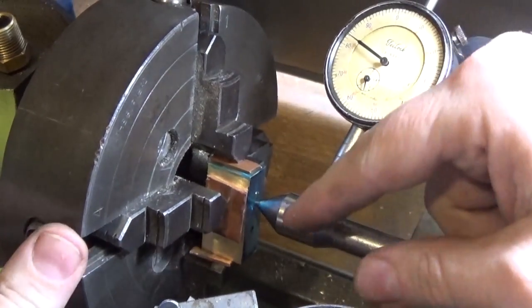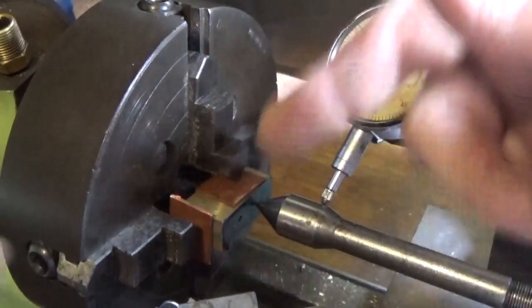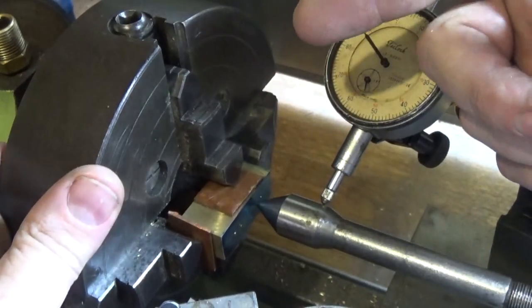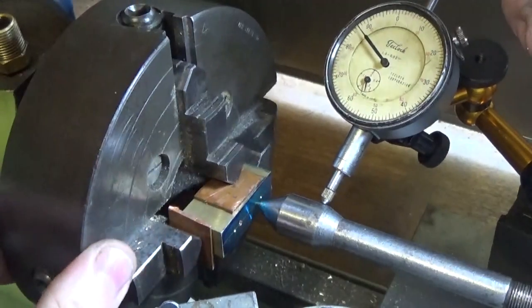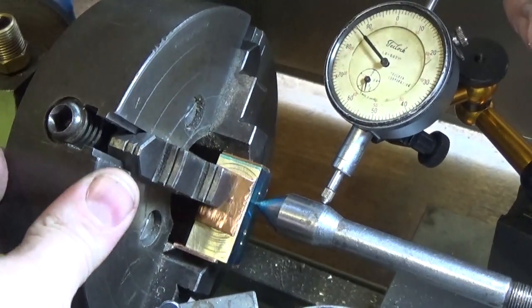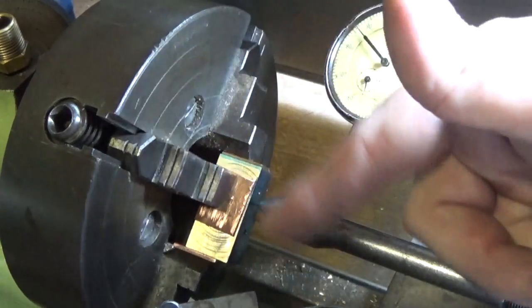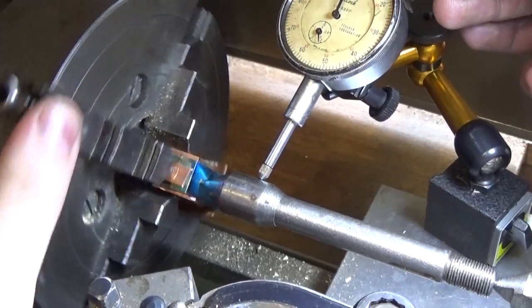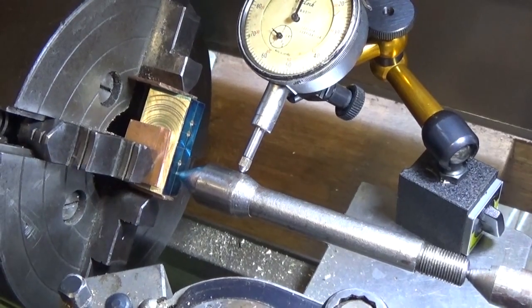So theoretically, to do the opposite hole, all we've got to do is turn the piece around and undo jaw one and two, turn him round, and set him up again, and he should be right. It's not, it's out about 15 thou, something like that. So I'm going to set him up again, drill the next one, do the outside ones. And it's number three. And there's number four.